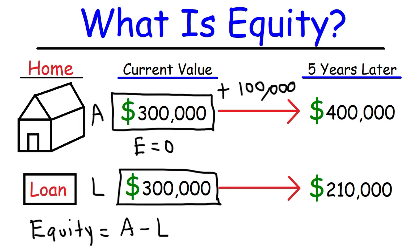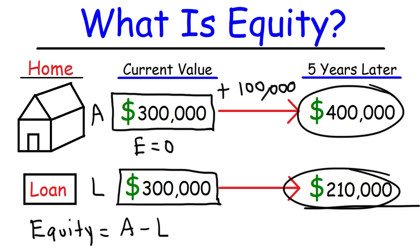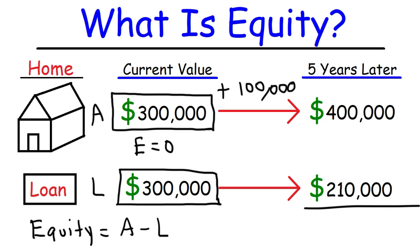How much equity do you now have in your home? As was mentioned before, equity is the difference between assets and liabilities. You have an asset that is $400,000 in value, and your liability is $210,000. So $400,000 minus $210,000 gives us an equity of $190,000 — that's how much equity you would have in your home.